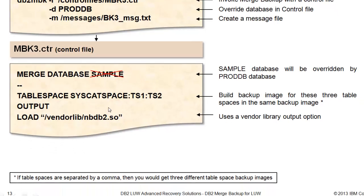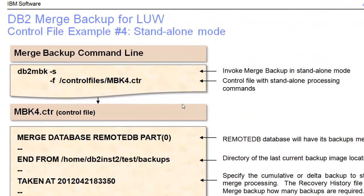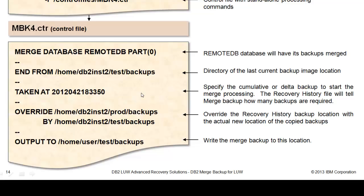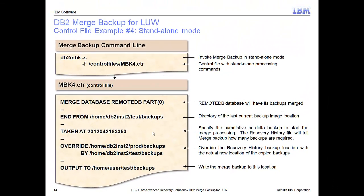Down here we see an example of merging tablespaces — there are three: cat space, ts1, and ts2. The colons between them tell Merge Backup to make one backup output file. If we were to put commas between them, that would indicate three backup files, one for each. And finally, an example of standalone: to invoke standalone, you use the minus s option. The control file here takes a little bit more into account, since there isn't anything taken for granted in standalone mode — you want to specify where the backups are from, which particular backup image it is, and the location where it's going to be written. So when running standalone mode, your control file information may need to be more specific than in normal mode.